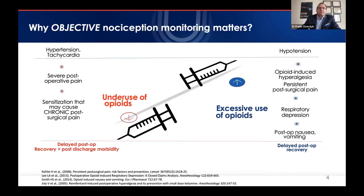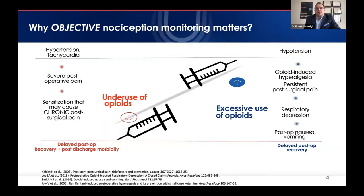There is at least a 30-fold interpatient variability in response to a given dose of opioids. If everyone on this call received 10 milligrams of morphine, some would barely notice it while others would be heavily sedated with a low respiratory rate. The consequences of underdosing opioids include unstable hemodynamics, hypertension, tachycardia, postoperative pain, prolonged PACU stays, poor organ perfusion, unhappy patients, and longer-term consequences such as chronic pain and opioid dependence.